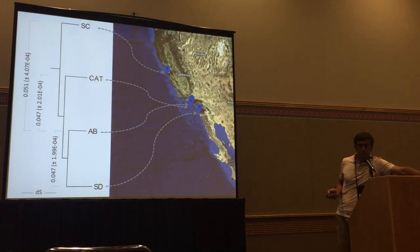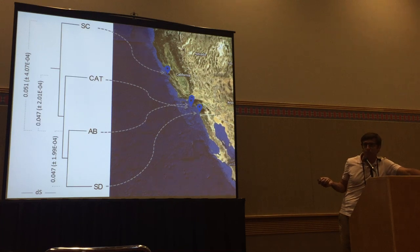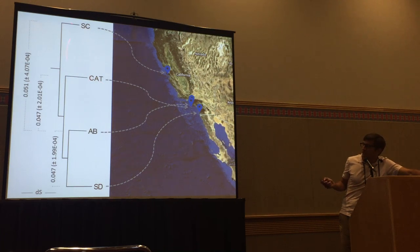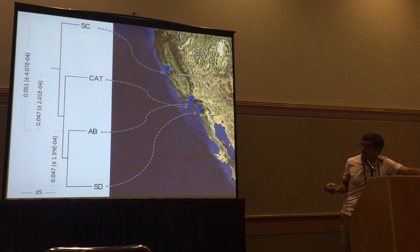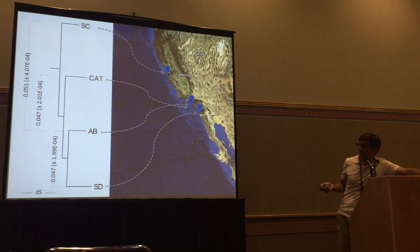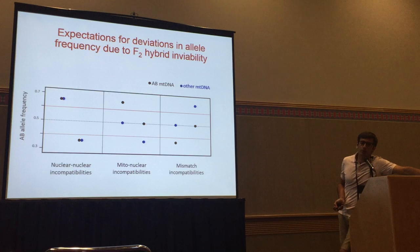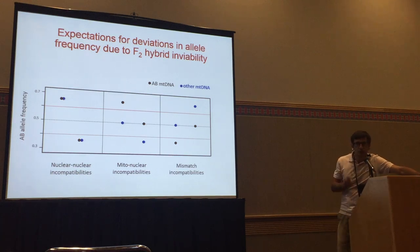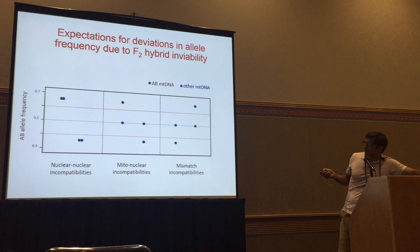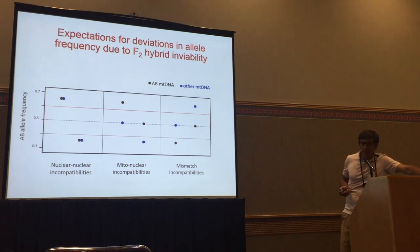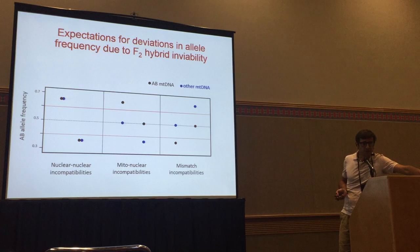I compared three different crosses. All crosses involved the AB population, crossed to San Diego, Catalina Island, and Santa Cruz. Looking at genome-wide synonymous substitution rate, there is very little difference in how divergent these crosses are — they have very similar levels of divergence. I performed reciprocal crosses, so the nuclear genomes should be the same in the hybrids, but each direction of the cross yields a different mitochondria. The black dots indicate the direction where we have the AB mitochondrial DNA; the blue dots indicate the other population's mitochondrial DNA.